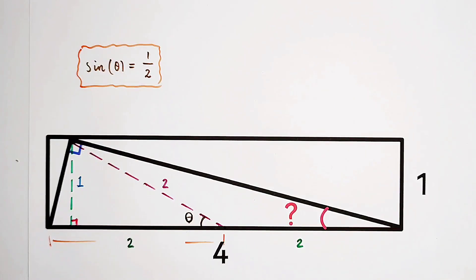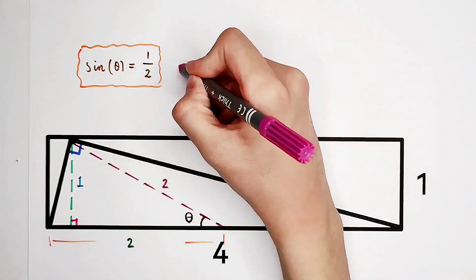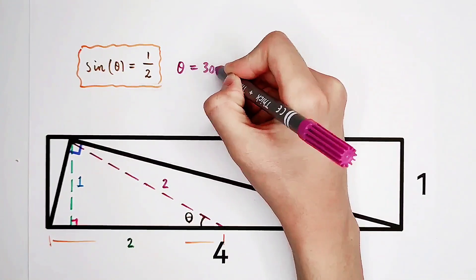Of course, it is between 0 degrees and 90 degrees. All of us know that theta is 30 degrees.